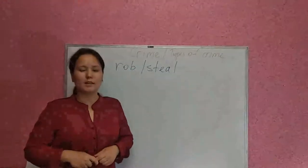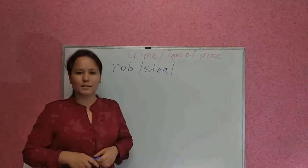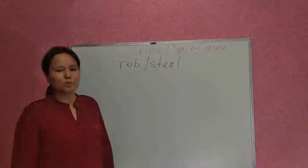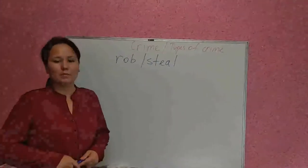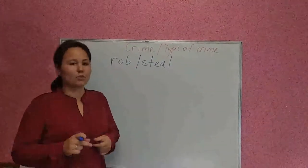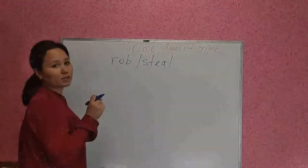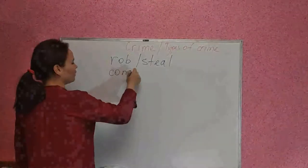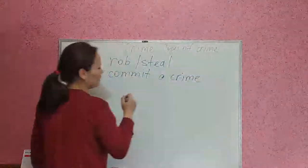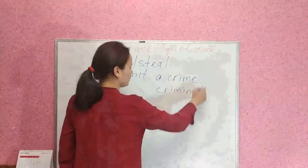Let's go to section B and discuss types of crime. I will provide some more types. Look at the table in section B — there are some crimes along with their definitions and the person who commits each crime. What is the verb for an illegal action? We commit a crime. And how do we call a person who commits a crime? This is a criminal.